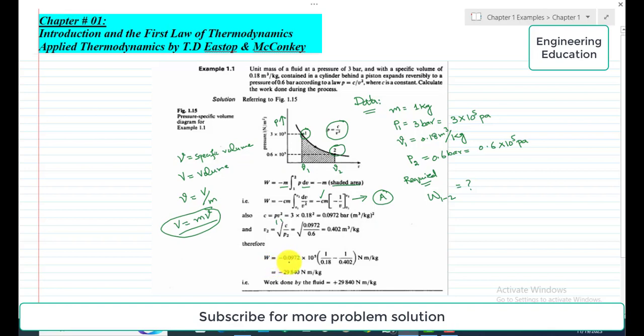So it becomes W is equal to minus 0.0972, M is 1, and 10 to power 5 is just for converting it to Pascal, this is the multiple. Into, these are the limits: when we put 1 over V1 minus 1 over V2, it becomes 1 by 0.18 minus 1 over 0.402, and Newton meter per kilogram. So when we simplify these values, we get minus 29,840 Newton meter per kilogram.